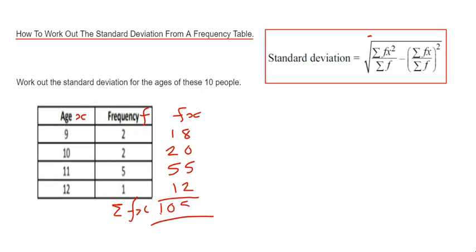The next thing we need to do is work out sigma fx squared. To do this, we're going to square our ages and multiply by the frequency, then add this column up. My first one would be 9 squared is 81, times 2 is 162. Next, 10 squared is 100, times 2 is 200.